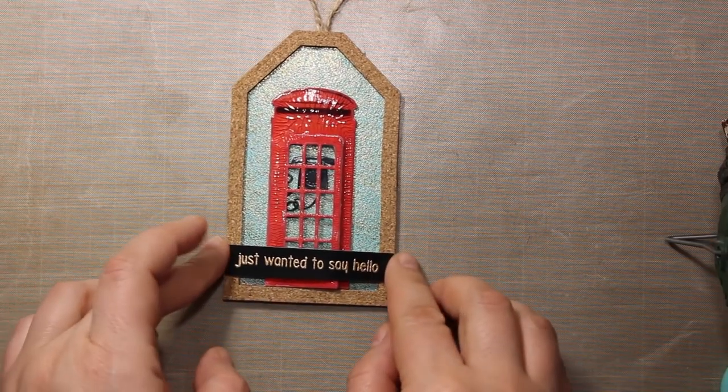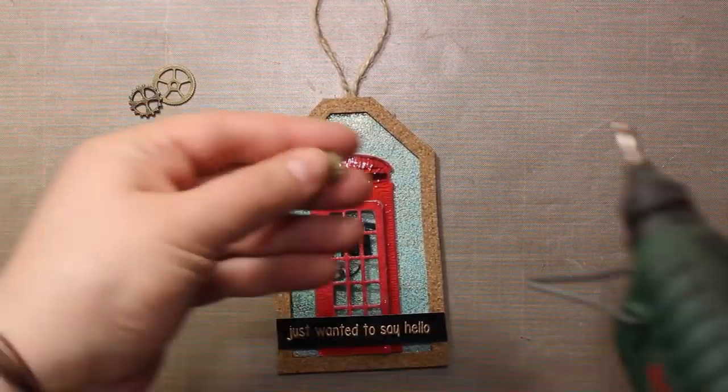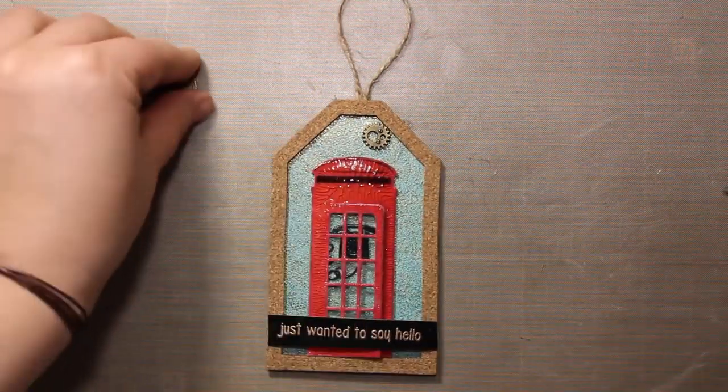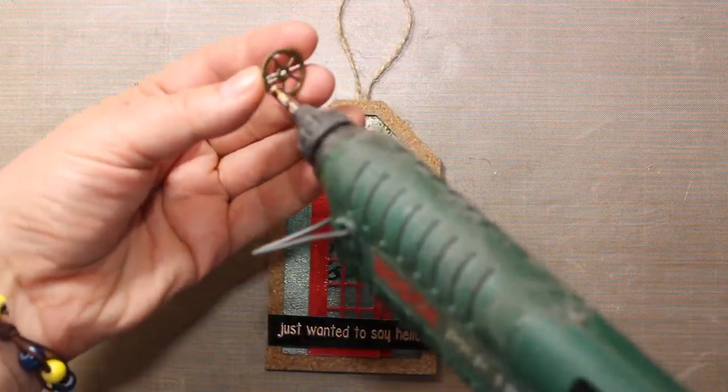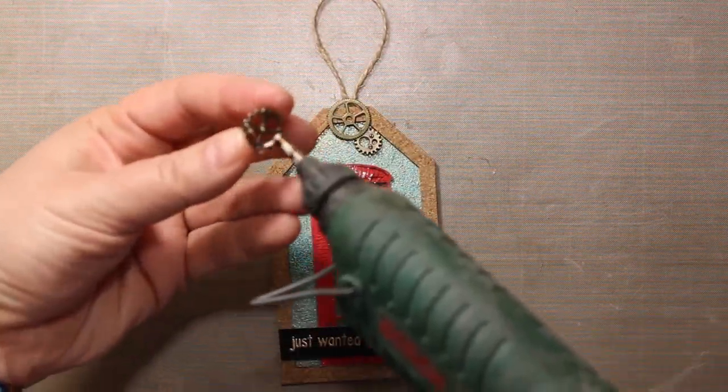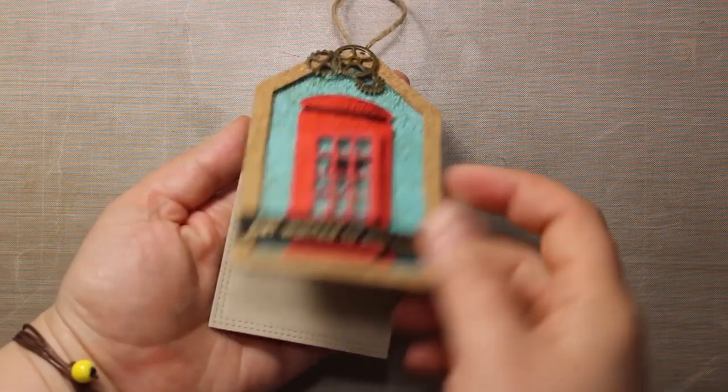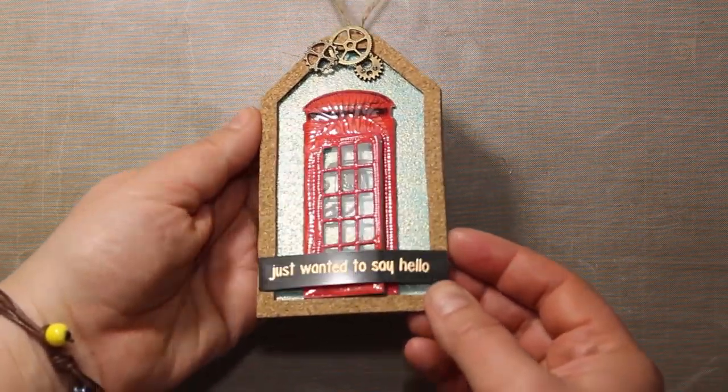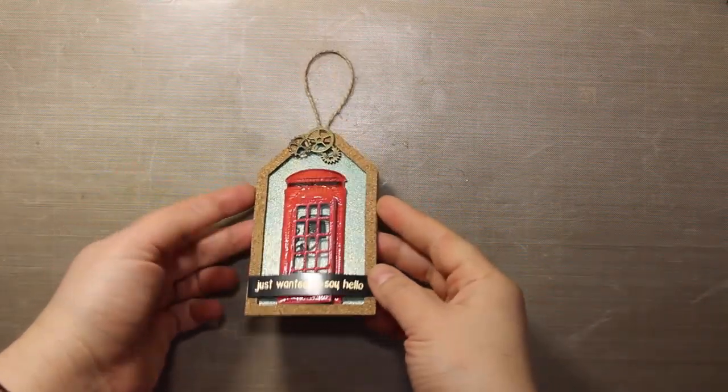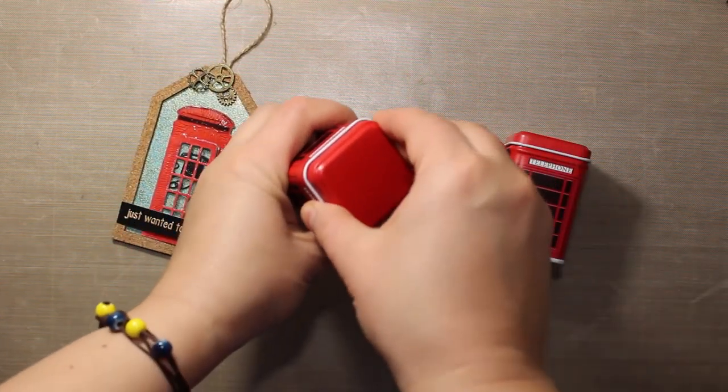I have trimmed down this sentiment strip to the size of the tag and now I'm going to attach it using a little bit of hot glue. I'm positioning it closer to the bottom of the tag and just slightly pressing it down until it sticks. As a finishing touch I'm going to attach three decorative bronze gears to the top of the tag, again using some hot glue. The hot glue is perfect for dimensional pieces like these and it dries instantly. So this is what the finished tag looks like.